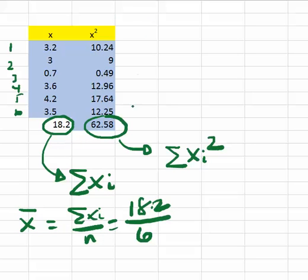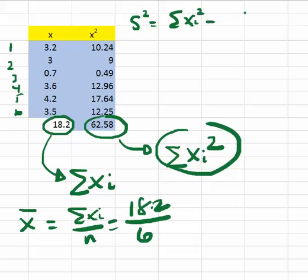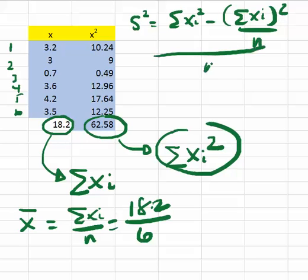And here, I can use this to calculate the variance. Remember, the variance is the sum of xi squared minus the sum of xi all squared over n, over n minus 1.